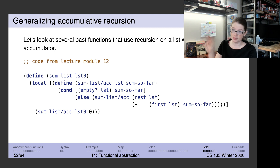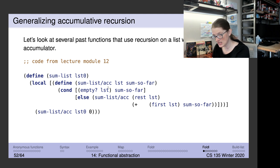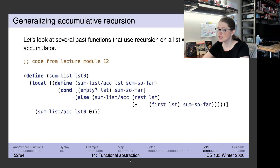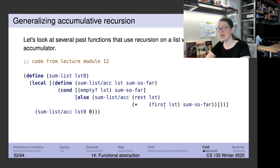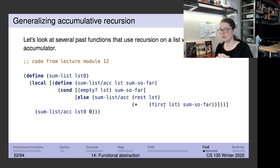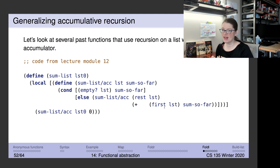In the accumulative recursive sum function: if the list is empty, the sum is in the accumulator — so we produce the accumulator. Otherwise we call the accumulator function on the rest of the list and update the sum-so-far by adding the first element. This is very good at simplifying things that can be complex with simple recursion, like computing the maximum of a list.